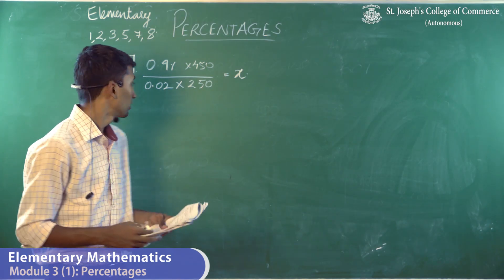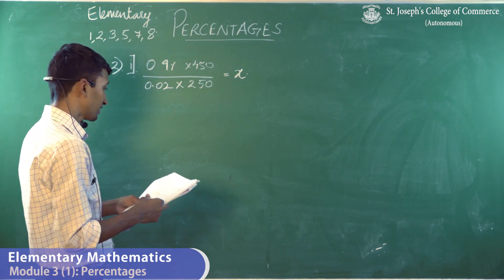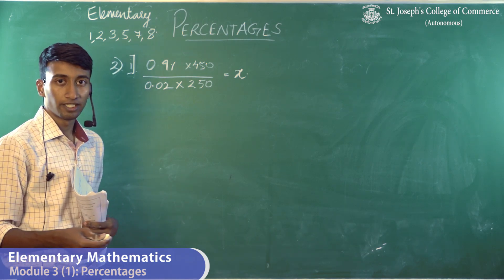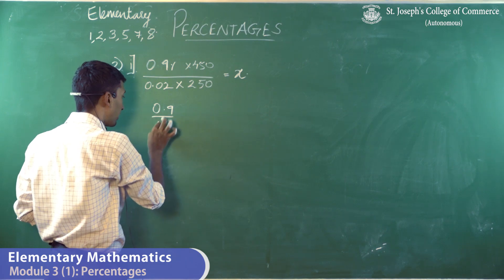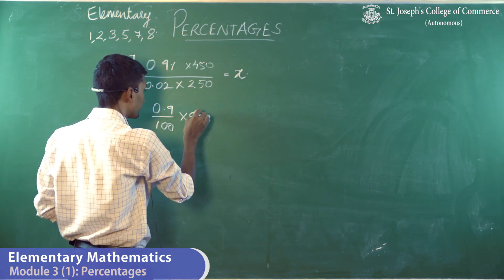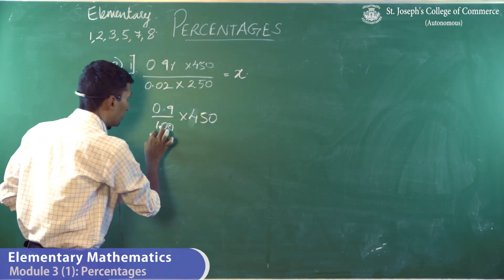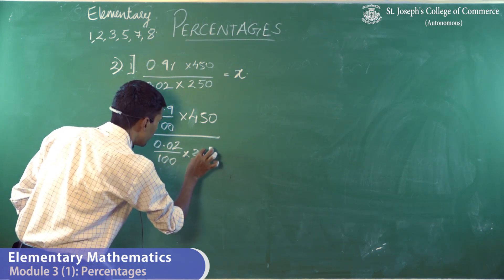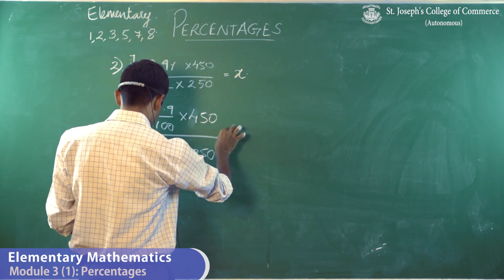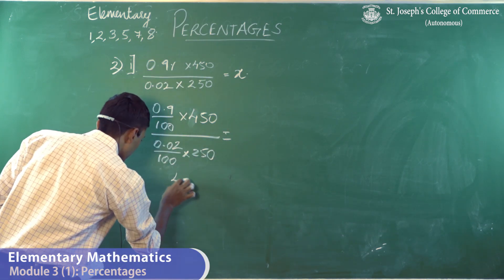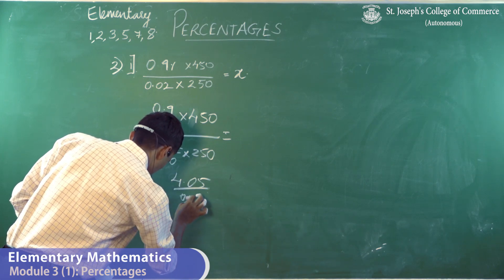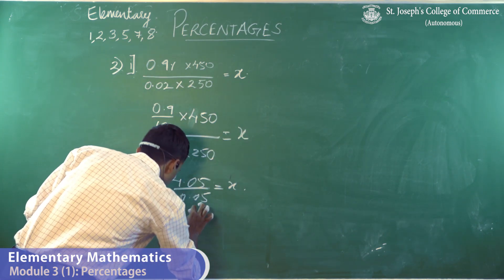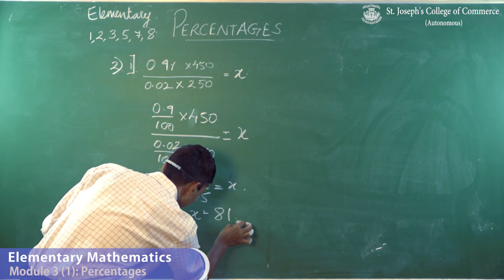Moving on to the second sum, part one: 0.9% of 450 divided by 0.02% of 250 equals x. So we compute 0.9/100 × 450 divided by 0.02/100 × 250. This gives 4.05 divided by 0.05, and simplifying further, we get 81 as the answer.